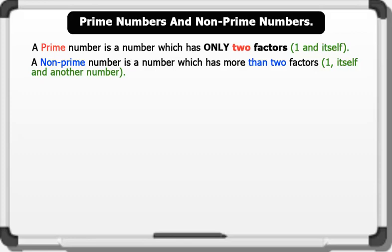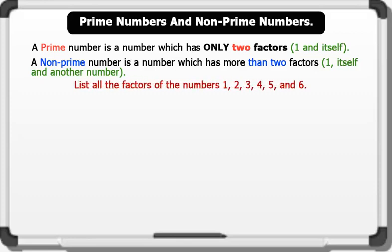Let's see an example. List all the factors of the numbers 1, 2, 3, 4, 5, and 6. Solution: Factors of 1 is 1.